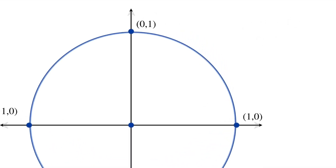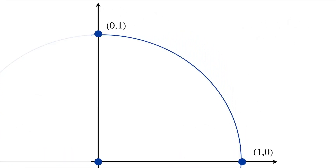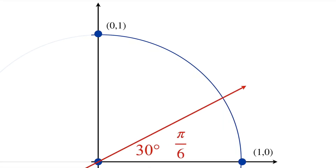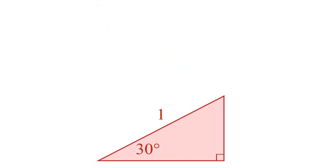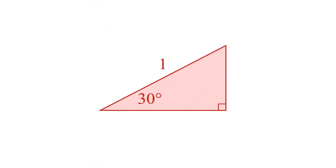Let's zoom into the first quadrant of our unit circle. The unit circle has three different types of angles, and the first angle looks like this. It's a 30-degree angle, or pi over 6, because 30 is one sixth of 180. What we need to do is find this point right here. To do this, we'll draw a right triangle, and our hypotenuse is 1, because this is also a radius of the circle. The shorter leg of a 30-60-90 right triangle is always half of the hypotenuse, so this is 1/2.